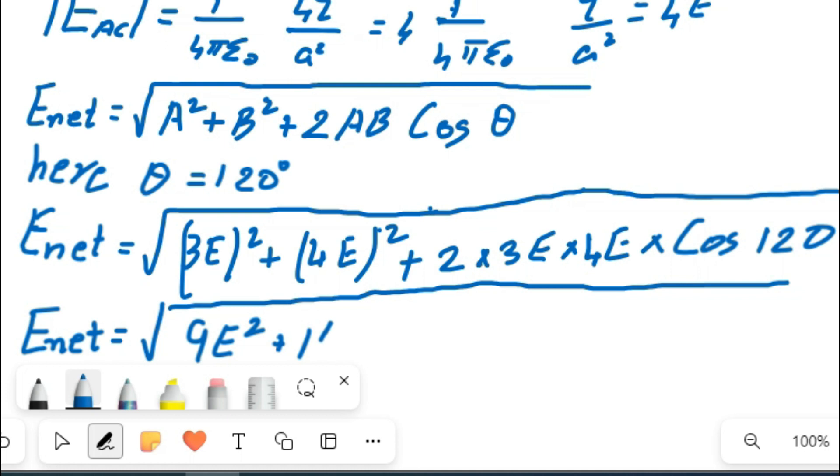Plus the second bracket will be 16E square. Plus then just multiply that one. So 2 into 3 into 4, that will equal 24E square. Then cos 120, as I said before, minus 1 by 2.